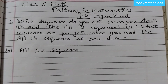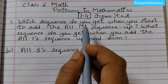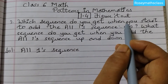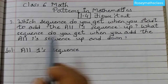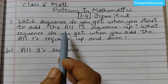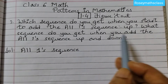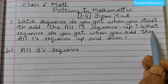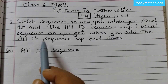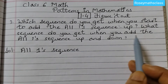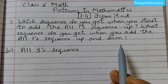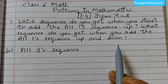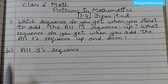Hello students, welcome back to Rosie Maths class. Today we shall discuss question number 3 of 1.4 figure it out. Which sequence do you get when you start to add the all ones sequence up? The second part is: what sequence do you get when you add the all ones sequence up and down? For this you should know what the all ones sequence is.